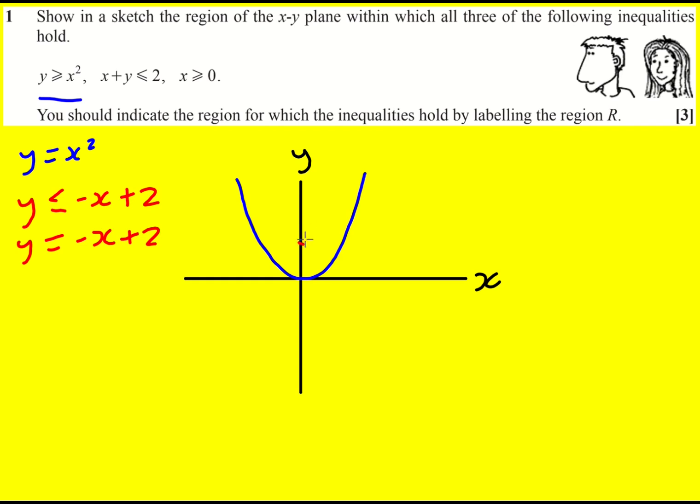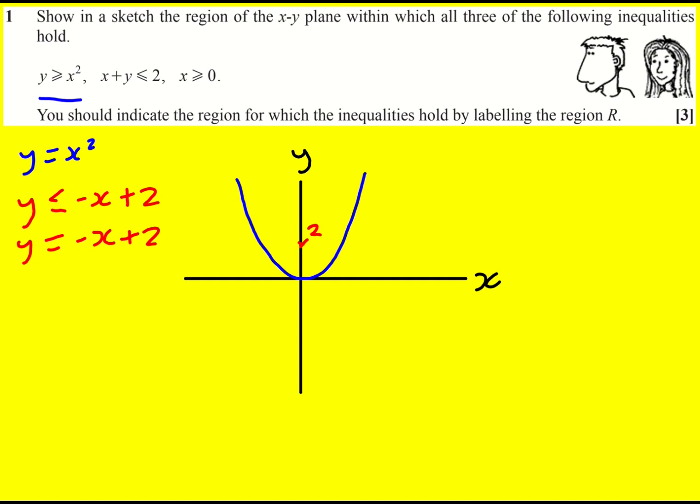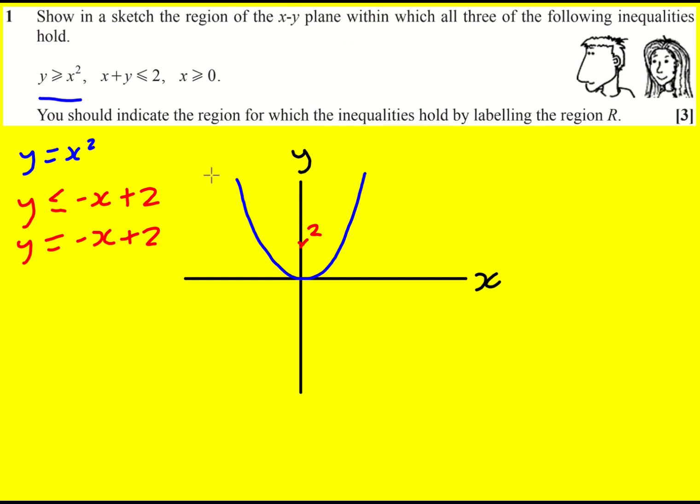There's a y-intercept of 2, so I will label that. And then there's a gradient of minus 1. So it looks a little bit like that. Again, I'm just going to extend my sketch to make it really clear that they're intersecting here.